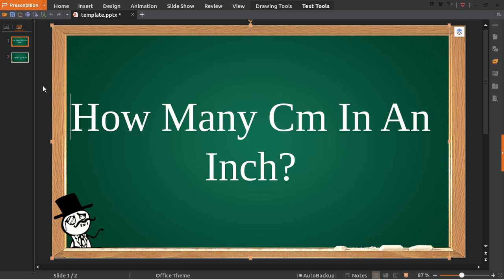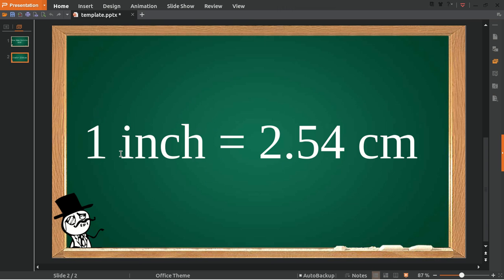To answer this question, I already provided you with the equation. Well, here it is: one inch is equal to 2.54 centimeters.